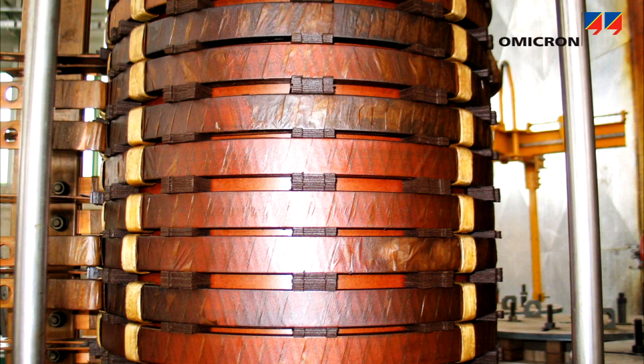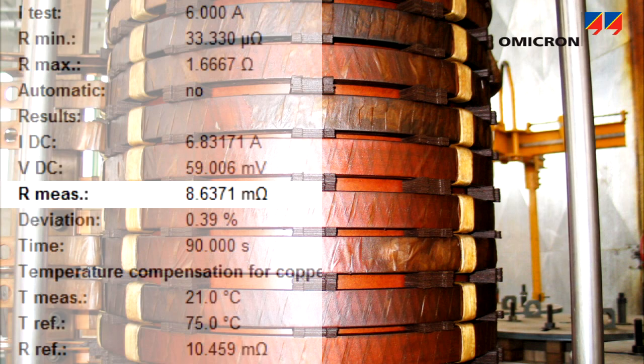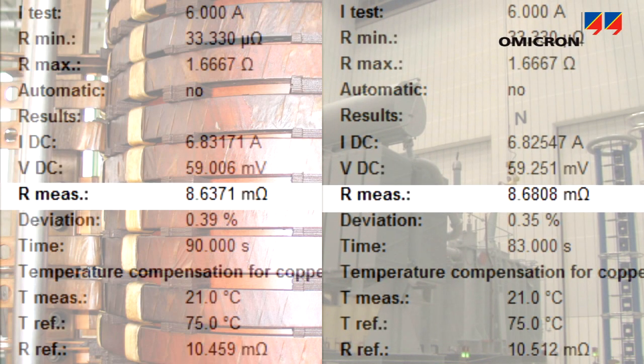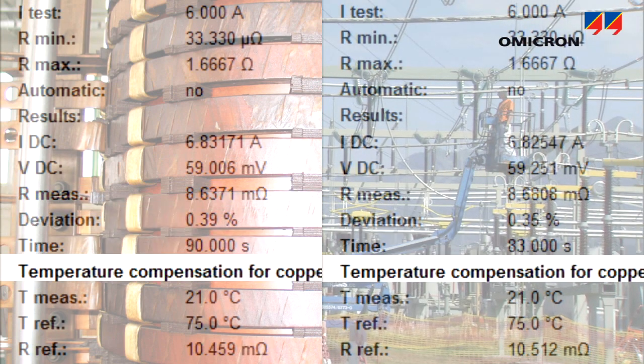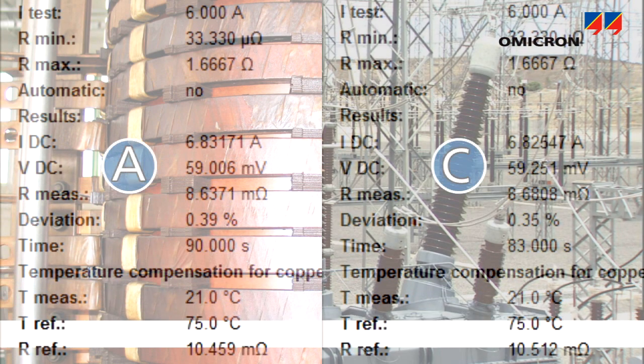The winding's condition can be assessed by comparing the measurement results with results from measurements performed in the factory or during commissioning, or with results from measurements of other phases.